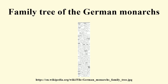The dynasties covered are the Carolingians, Conradians, Ottonians, Salians, Süpplingenburg, Hohenstaufen, Welf, Habsburg, Nassau, Luxembourg, Wittelsbach, Lorraine, Habsburg-Lorraine, Bonaparte and Hohenzollern. Only undisputed kings are included here.